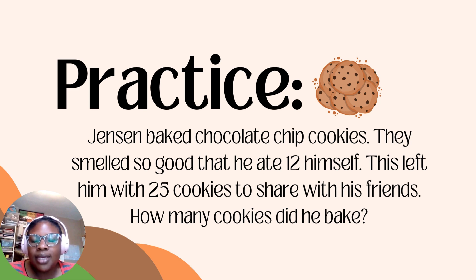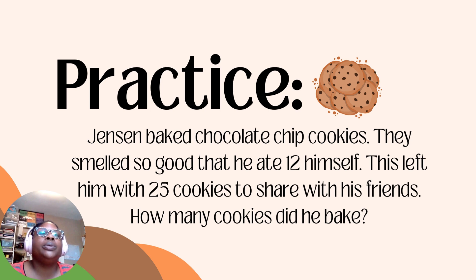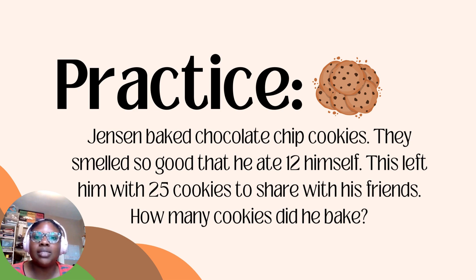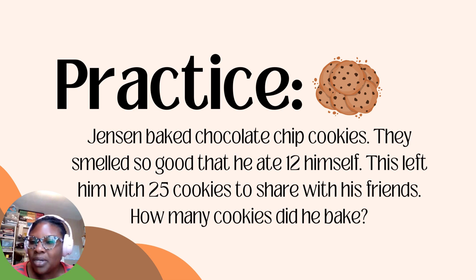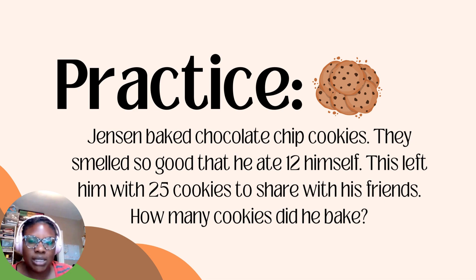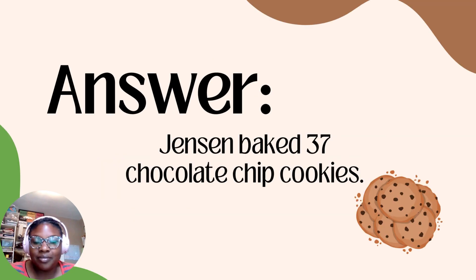Now, using the examples and strategies, I want you to practice. You're going to solve this word problem: Jensen baked chocolate chip cookies. They smelled so good that he ate 12 himself. This left him with 25 cookies to share with his friends. How many cookies did he bake? Remember to pause the video and work out this word problem using the previous strategies. Jensen baked 37 chocolate chip cookies.